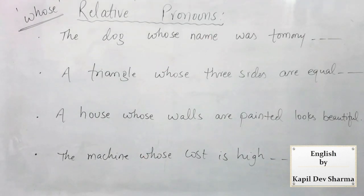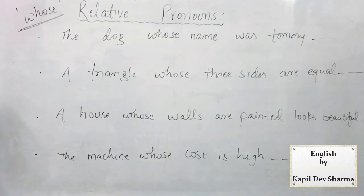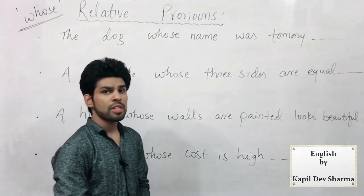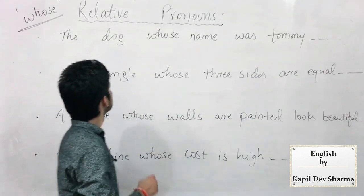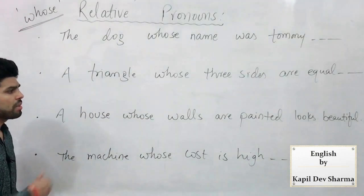Let's look at those sentences that were called incorrect in the last slide. So the very first one: 'The dog whose name was Tommy' — whatever I marked for it ahead.